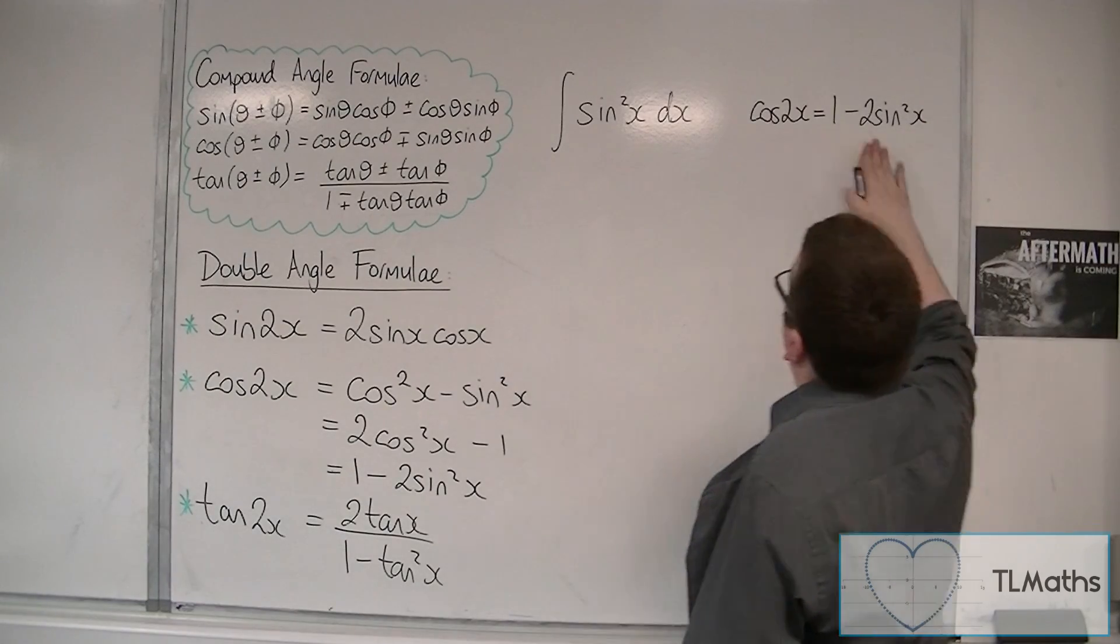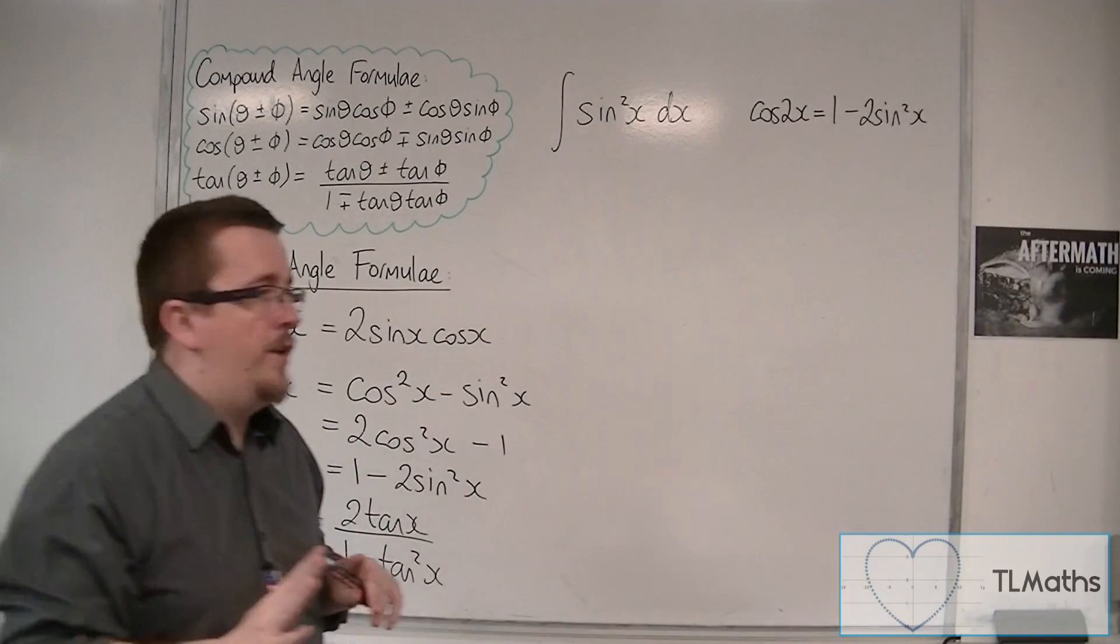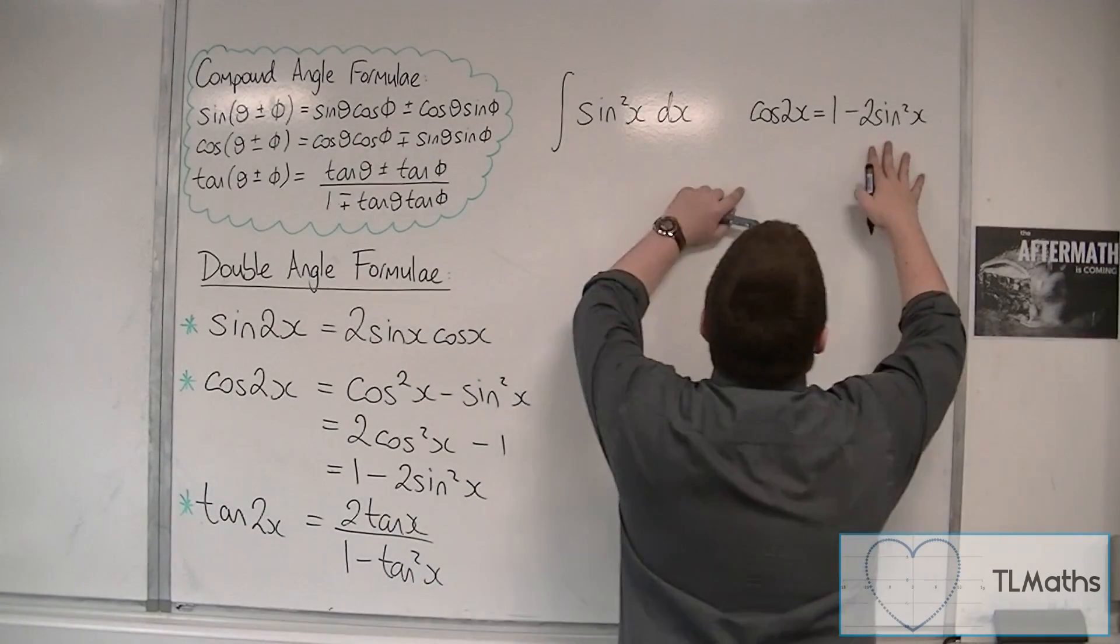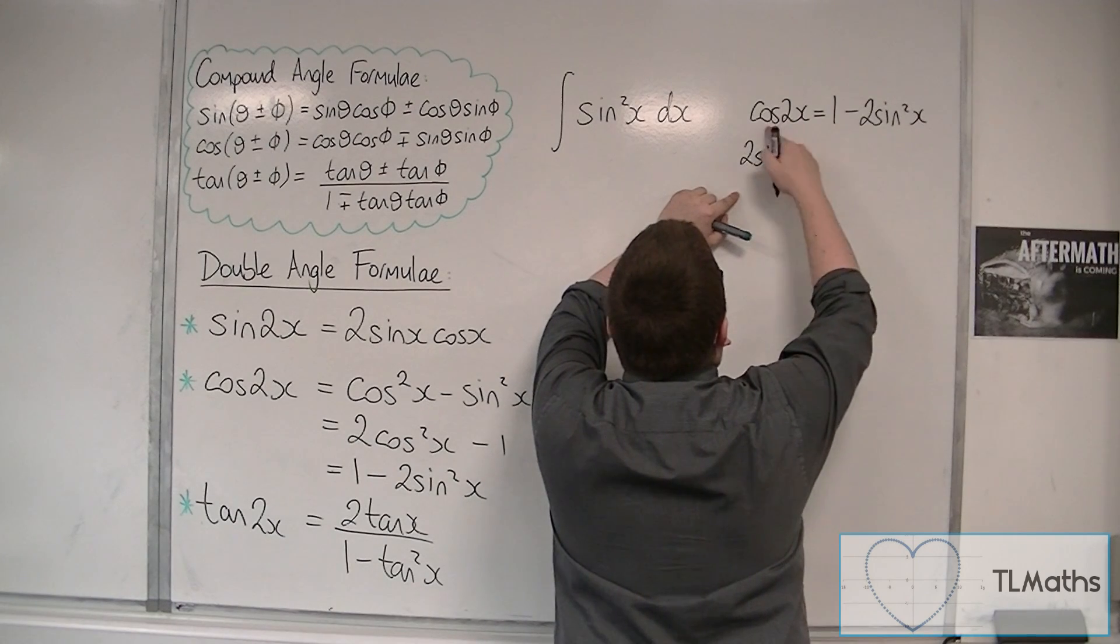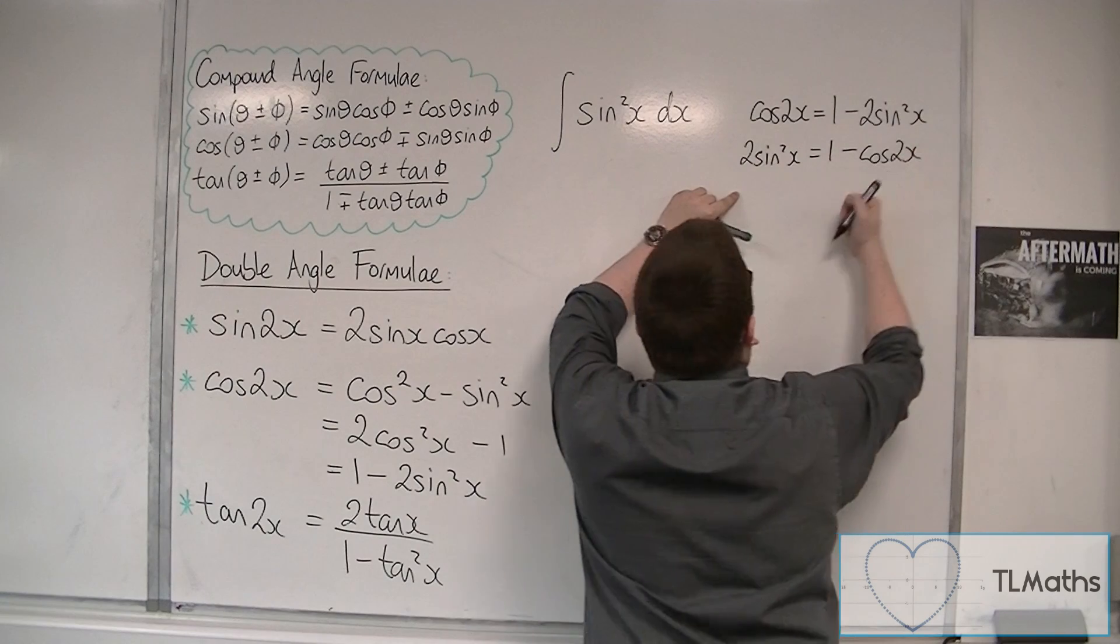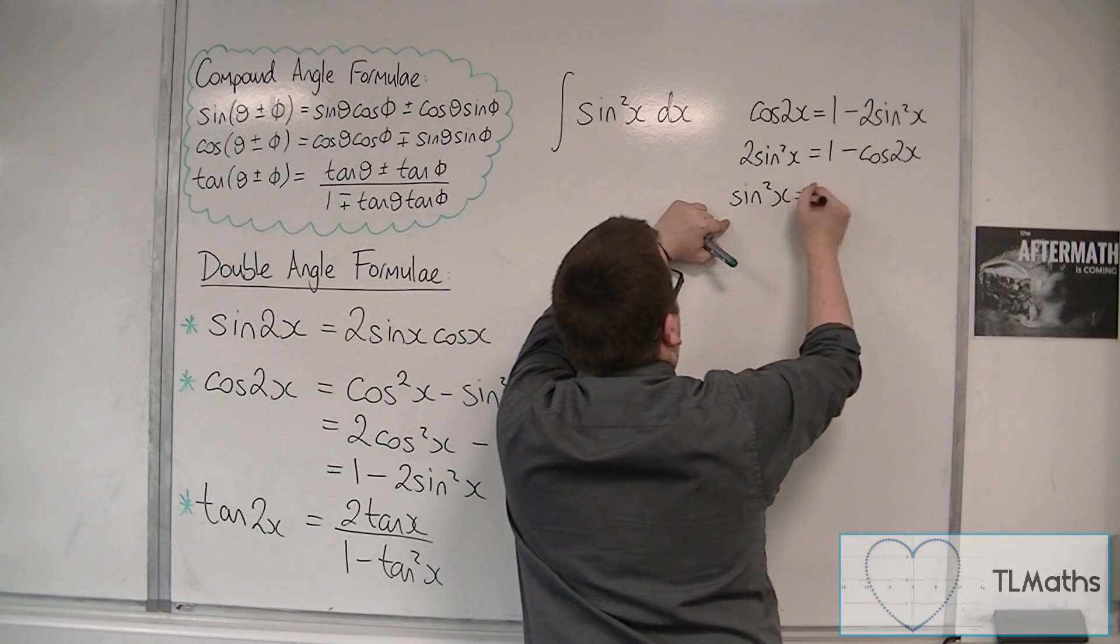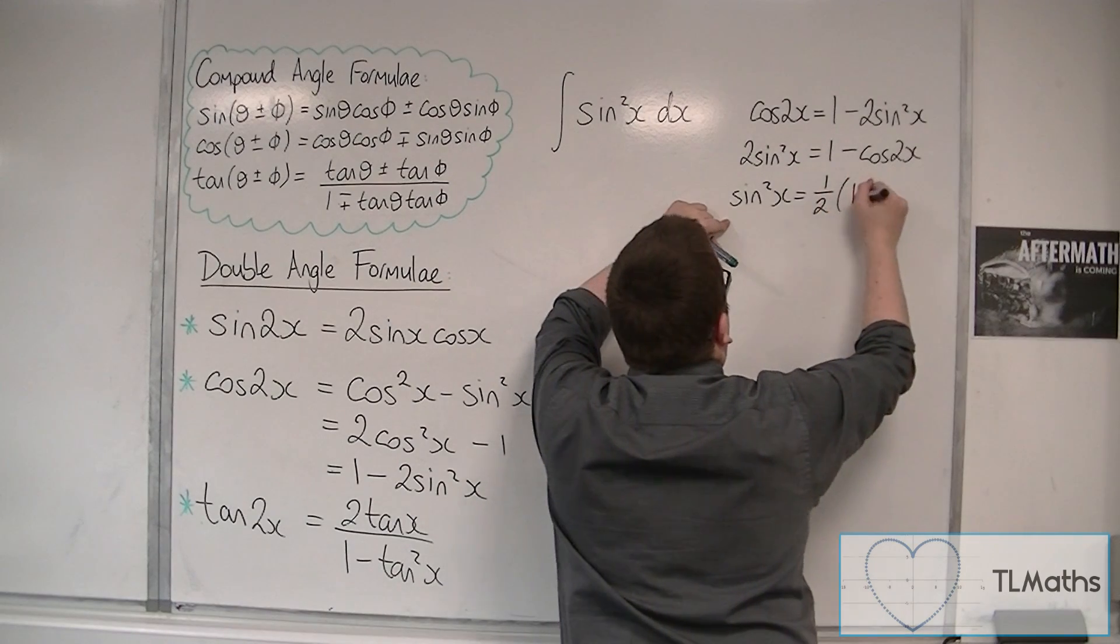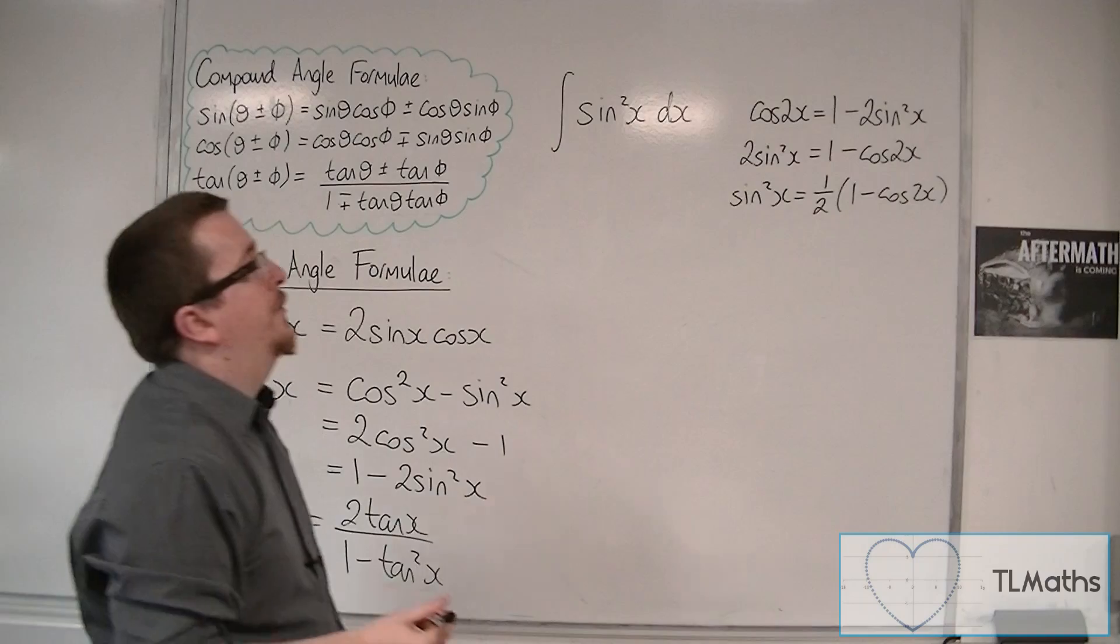Cos 2x is 1 minus 2 sine squared. So I want to use this identity. So I'm going to rearrange it. So I'm going to add 2 sine squared to both sides, and take cos 2x from both sides. You can then divide both sides by 2. And we get sin²x = 1 half times 1 minus cos 2x.